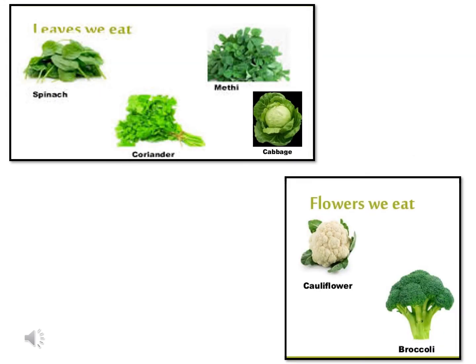These are some of the leaves of the plant that we eat: like coriander, methi, tulsi, spinach, cabbage, rocket leaves, lettuce, mustard leaves, etc. We also eat some of the flowers, like broccoli, cauliflower, etc.